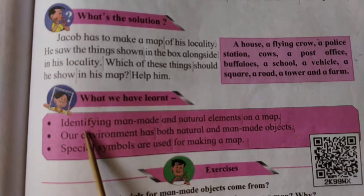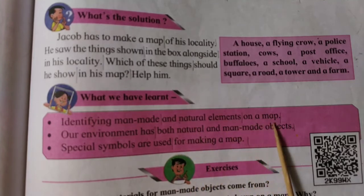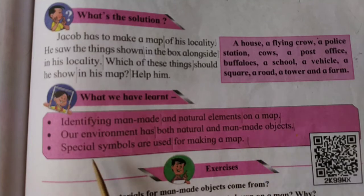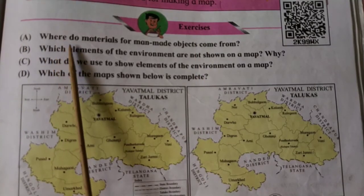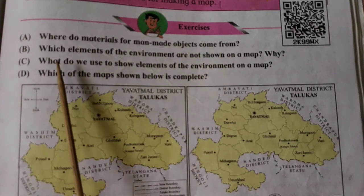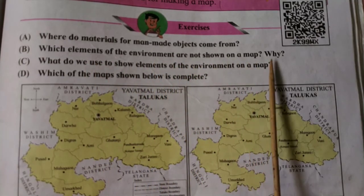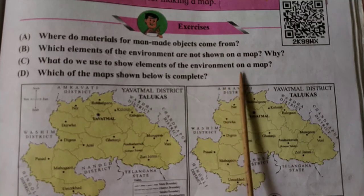What we have learnt: identifying man-made and natural elements on the map. Our environment has both natural and man-made objects. Special symbols are used for making a map. Exercises: Where do materials for man-made objects come from? Which elements of the environment are not shown on a map, and why? What do we use to show elements of the environment on a map?